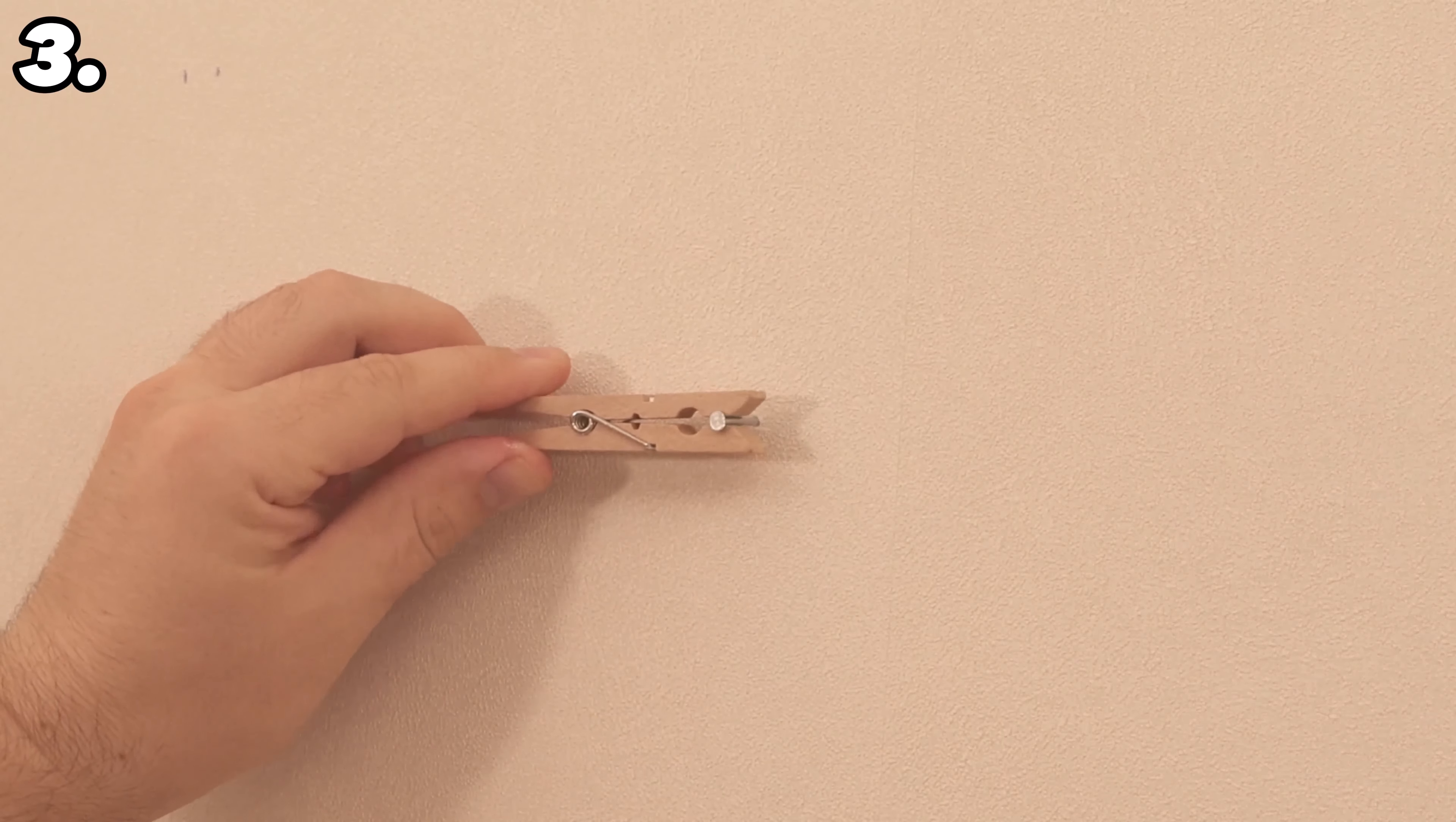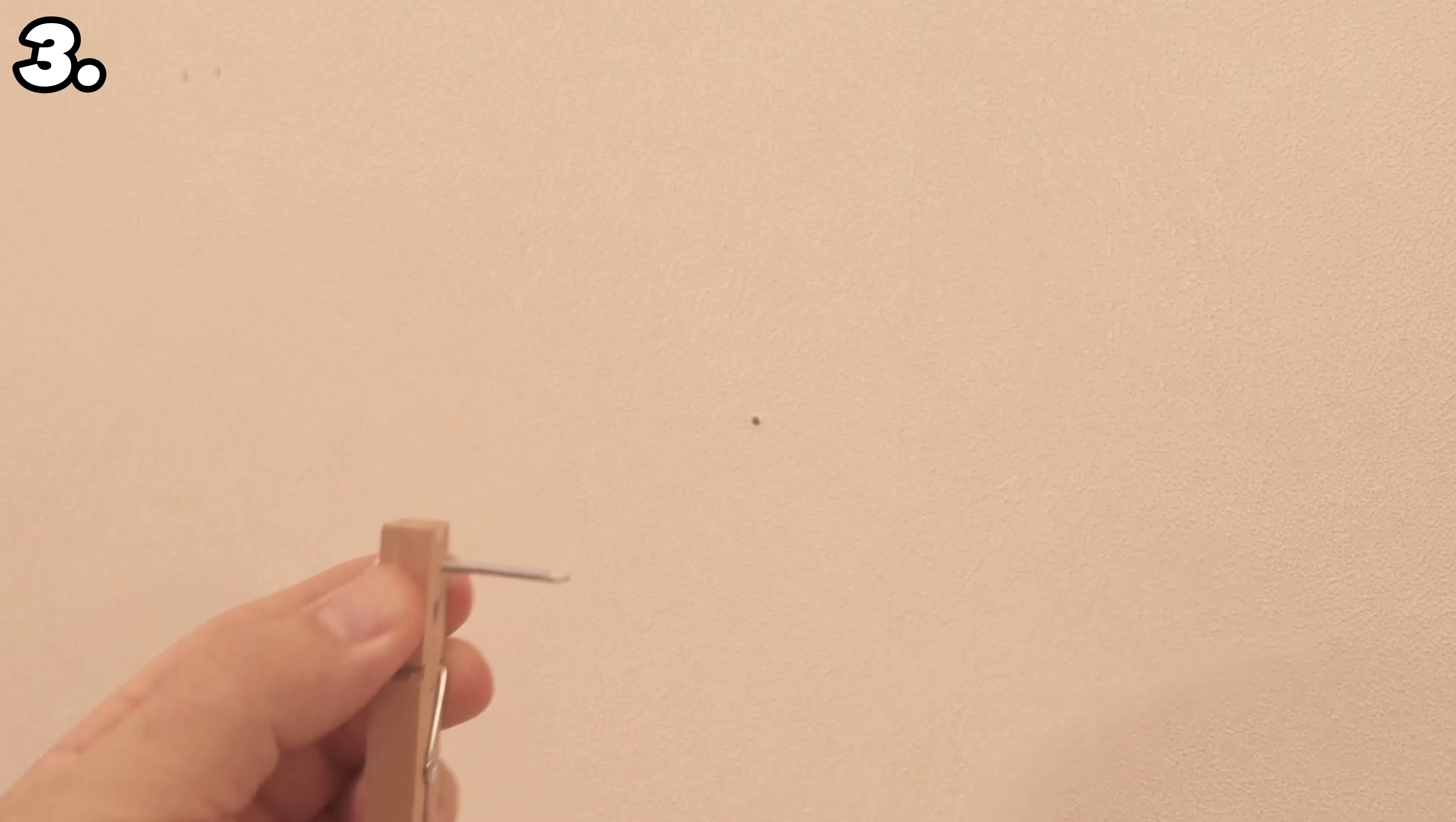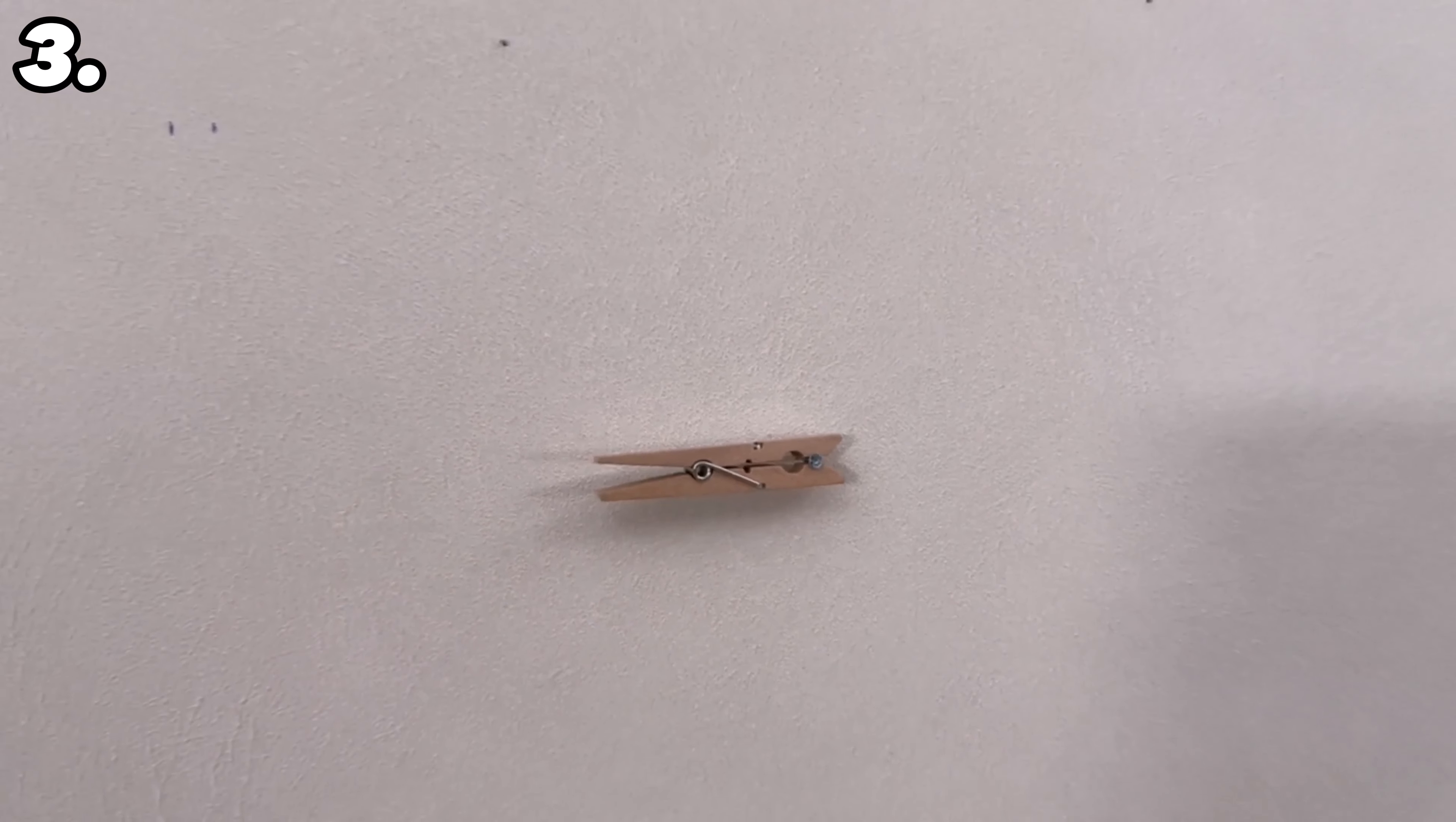You can even use the clothespin to pull the nail out of the wall. Clamp it in as you can see here, twist the whole thing back and forth a little, and after a short time you can easily get the nail out. The clothespin can help you if you want to hammer a nail into the wall, but also if you simply want to remove it.